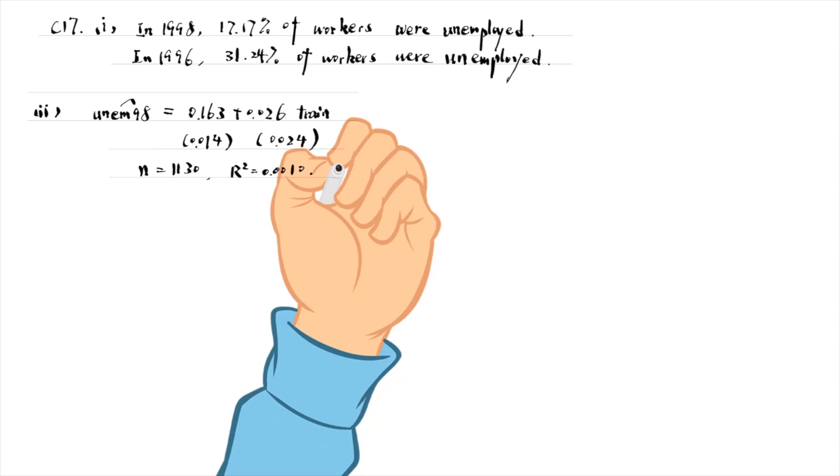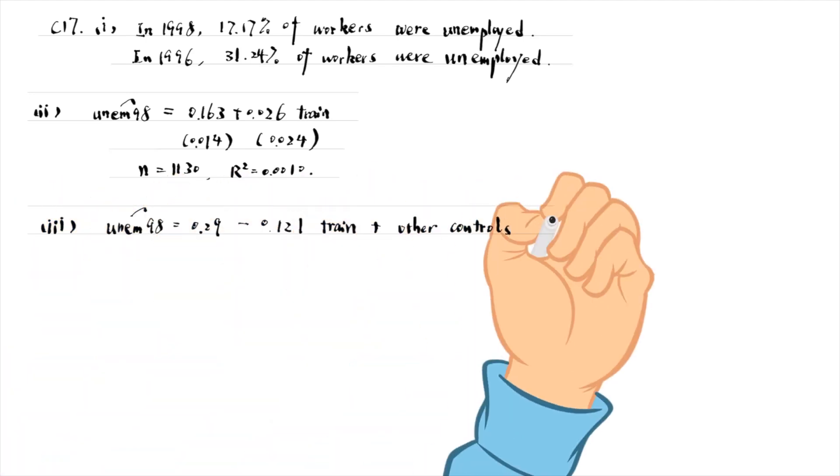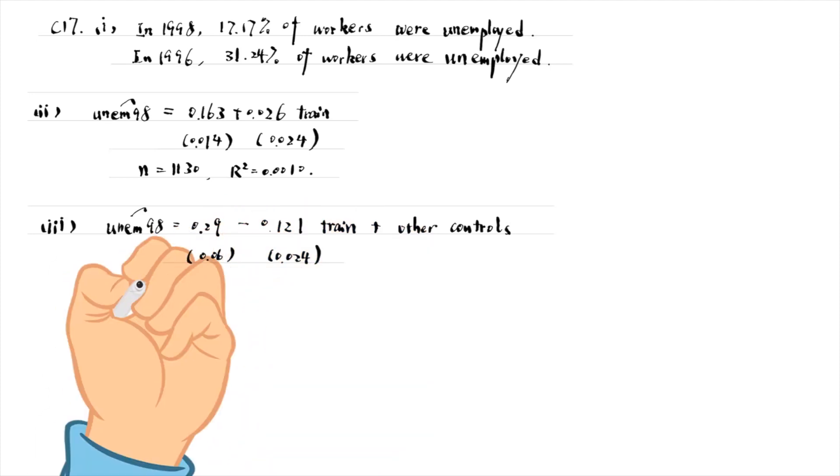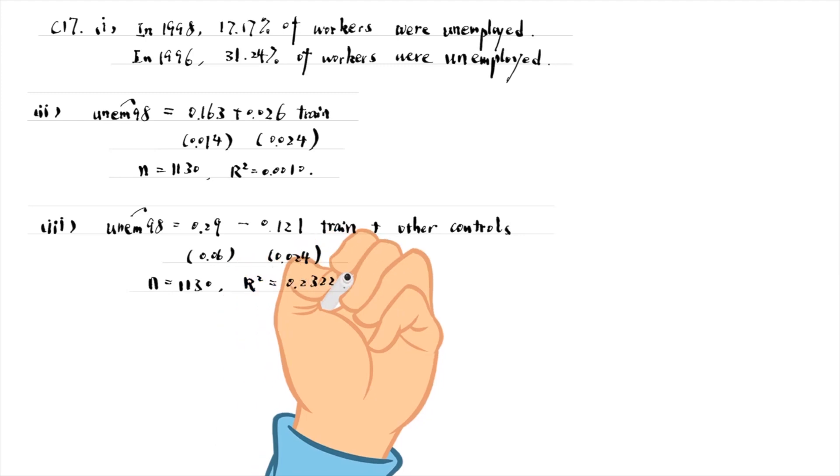The simple regression model suffers from reverse causality, because unemployed workers are more likely to participate in the job training program. The model does not suggest a causal effect of job training on unemployment. In part 3, we add four other explanatory variables to the model. The estimated training effect becomes minus 0.121, meaning that the job training program reduces the unemployment rate by 0.121, holding other variables in the model fixed.